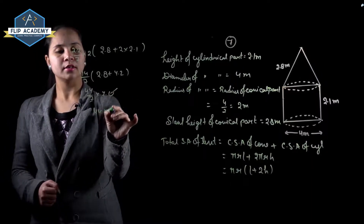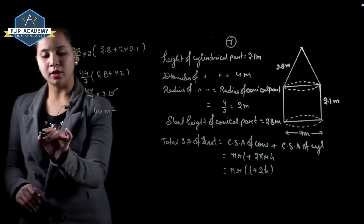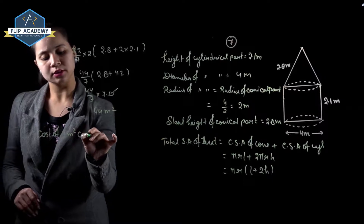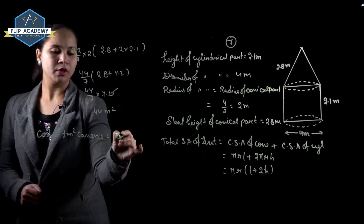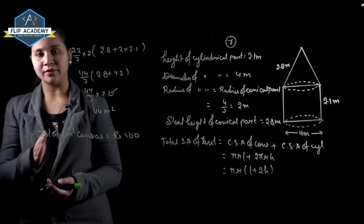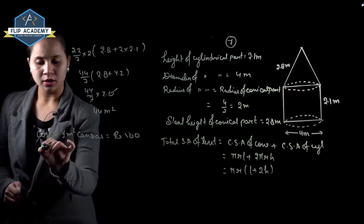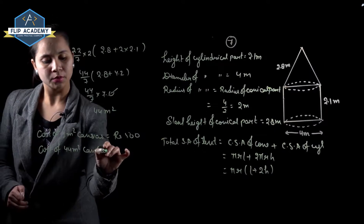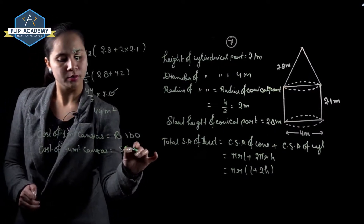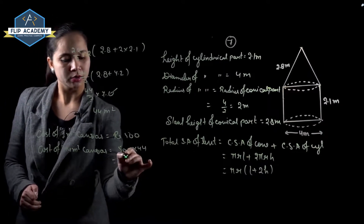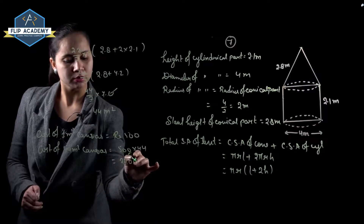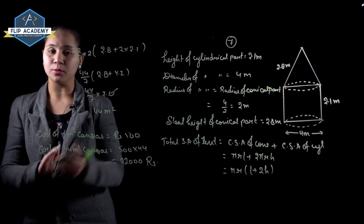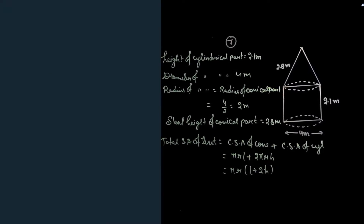So 44 upon 7 into 7.0 equals 44 meter squared. Total surface area is 44 meter squared. Cost of 1 meter squared canvas is rupees 500, so cost of 44 meter squared canvas equals 500 into 44, which equals 22,000 rupees. Question number 7 is complete.